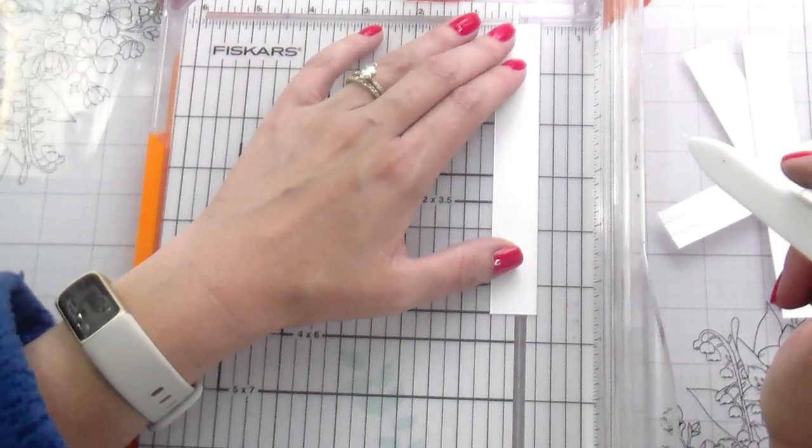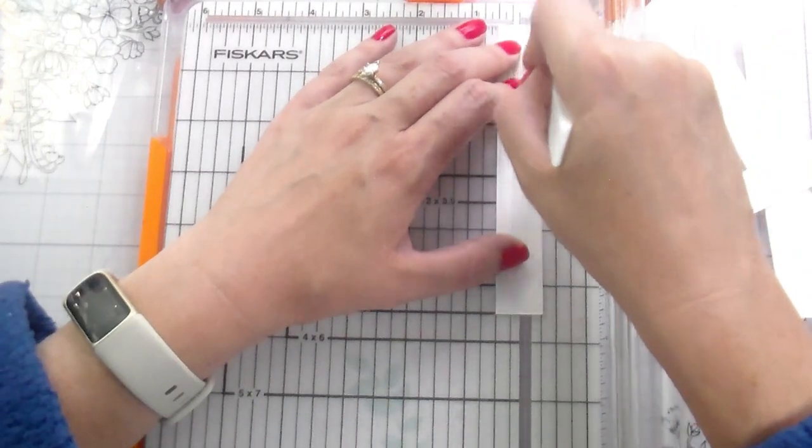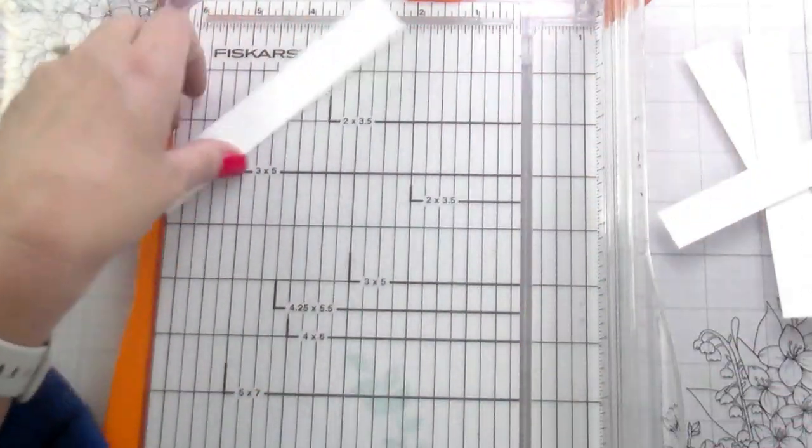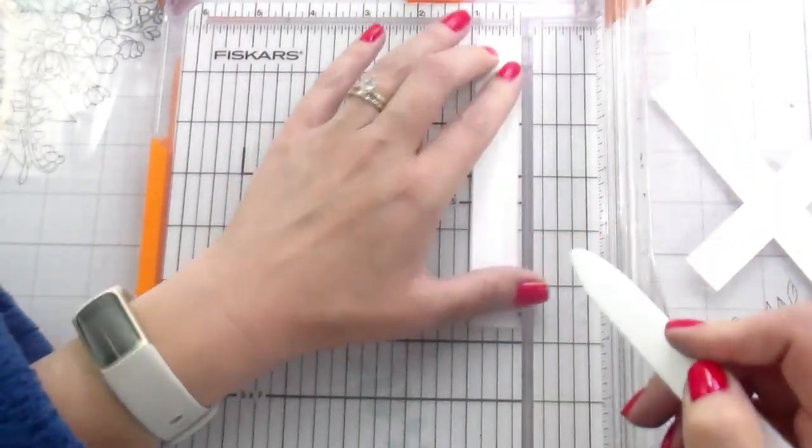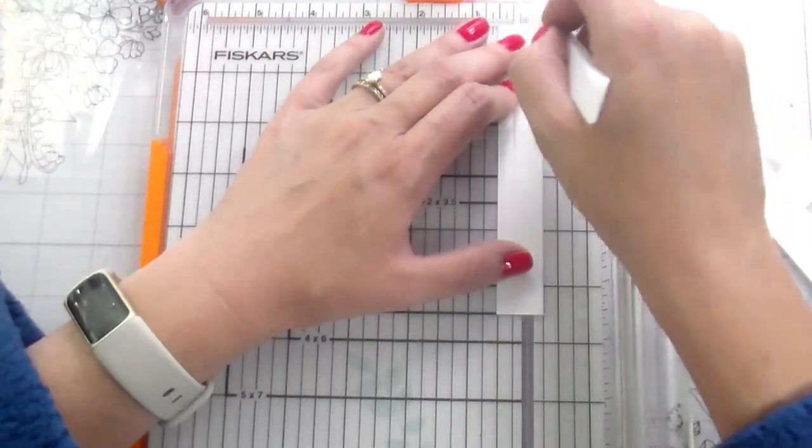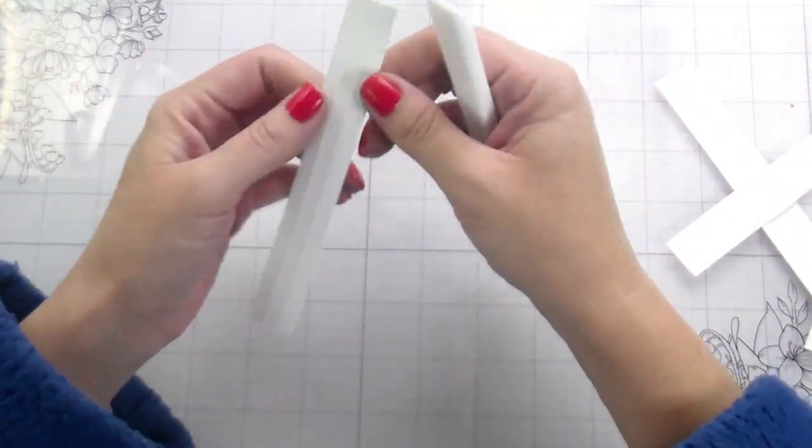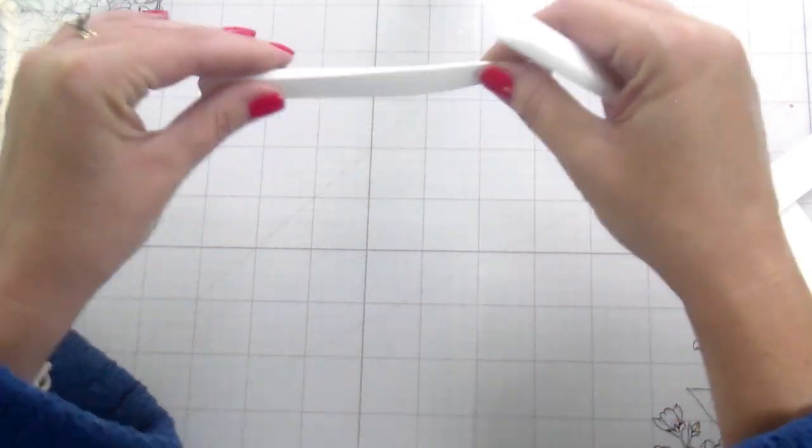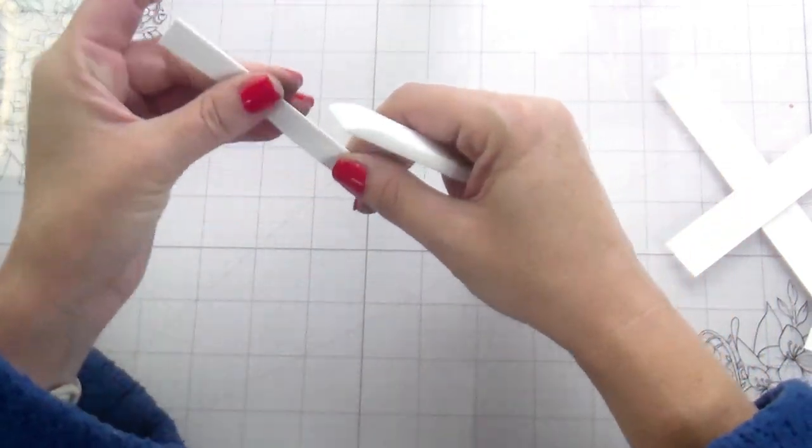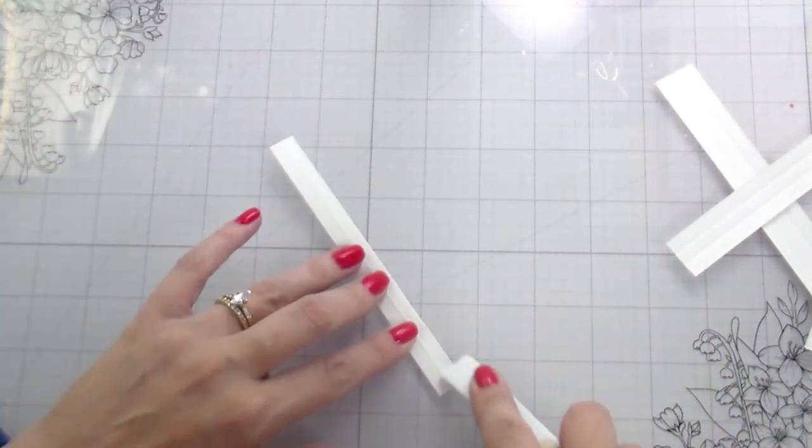I just flip mine around because it was easier to hold onto my little piece of paper. Somebody had mentioned in another video, I can't believe you score on your paper trimmer. I do have a scoreboard, but I never think to pull it out because I don't score a lot of things. So I just find it easier to just use my paper trimmer and my bone folder. So now you're just going to fold them into a little accordion fold. So one folds one way, the other one folds the other way. And you end up with this little Z kind of shape on the end.